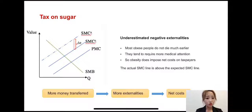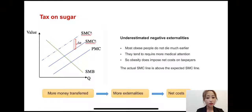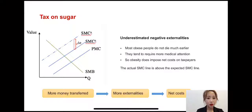Second, let's talk about the tax on sugar. Different vices have different economic costs. Things harm people in different ways. For the exceptionally overweight, most obese people do not die much earlier, but they do tend to require more medical attention than their healthier peers, often spanning the course of several decades. The actual social marginal cost line is above the expected line as the graph shows, so obesity does impose a net cost on taxpayers.